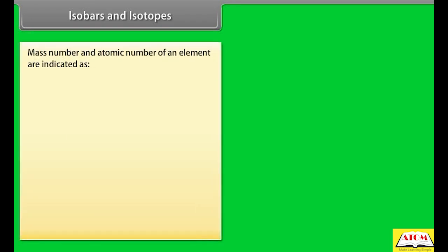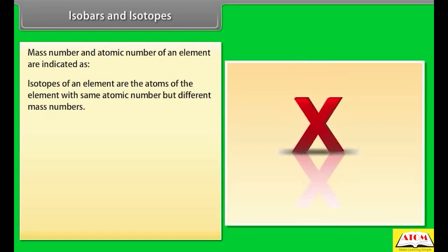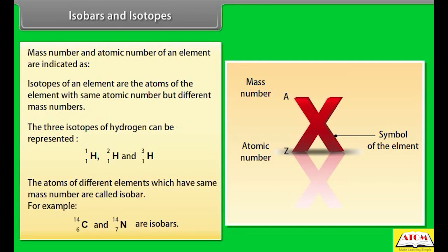Isobars and isotopes: Mass number and atomic number of an element are indicated as follows. Isotopes of an element are atoms of the element with the same atomic number but different mass numbers. The three isotopes of hydrogen can be represented accordingly. Atoms of different elements which have the same mass number are called isobars.